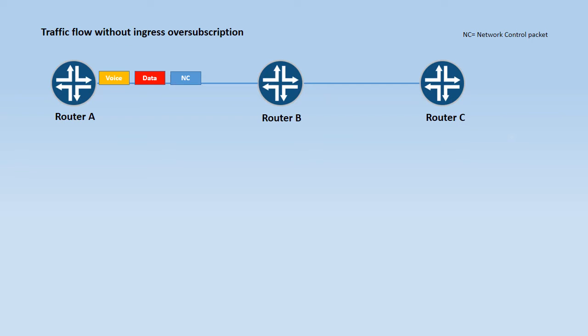Let's take a look at the normal traffic flow between router A, router B, and router C when there is no ingress over subscription.